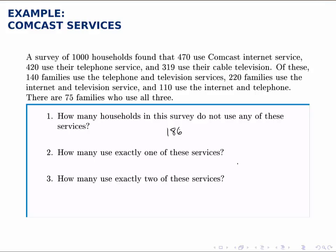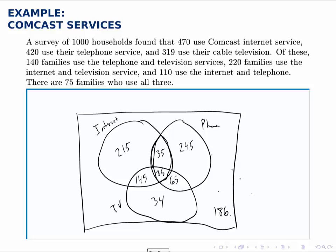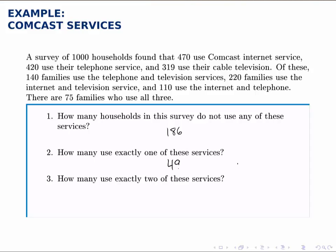Part 2 asks: how many use exactly one of these services? In other words, how many use one but not the other two? That would be those who use internet but not phone or TV, those who use phone but not internet or TV, and those who use TV but not internet or phone. That's 215 plus 245 plus 34, for a total of 494.